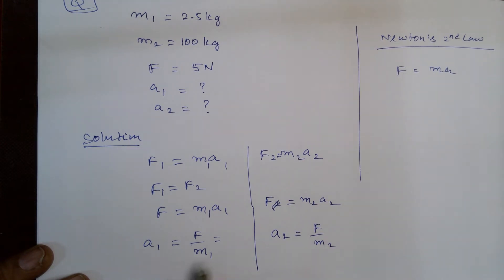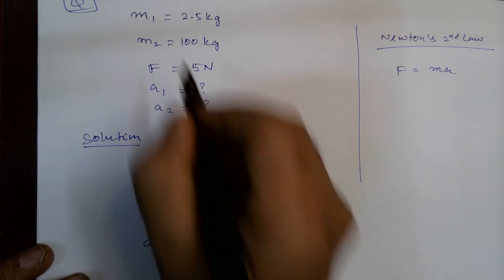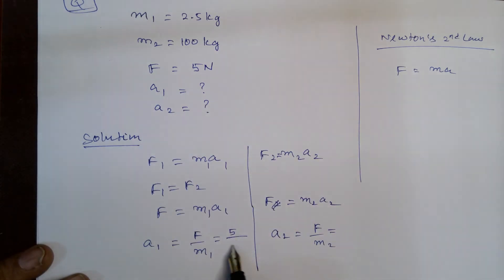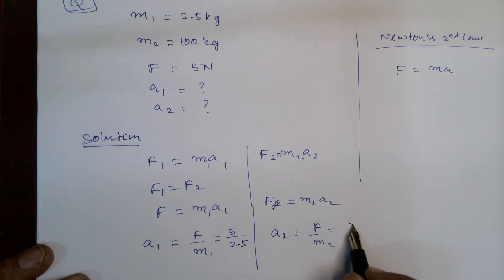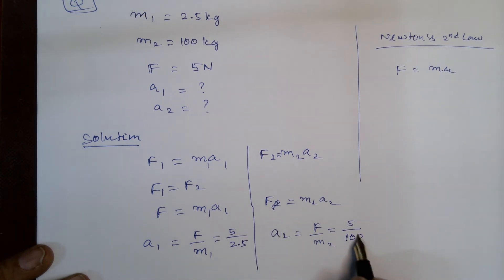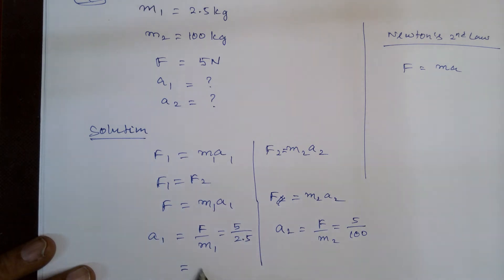Now let us substitute. F is 5 Newton divided by — in the first case — 2.5 kg, and in the second case, 100 kg. Therefore, what is the answer here? 5 divided by 2.5 means 2.